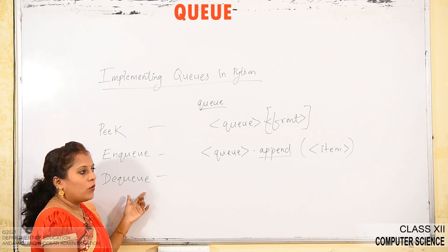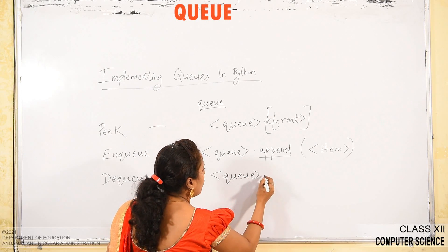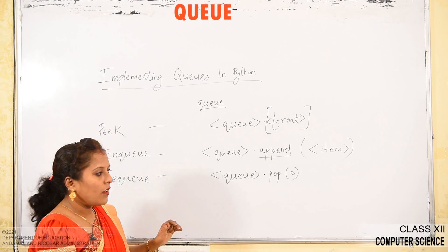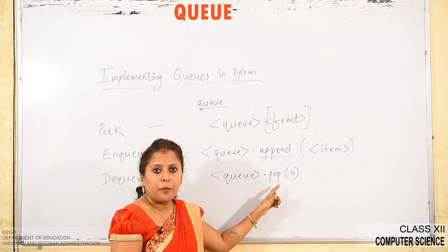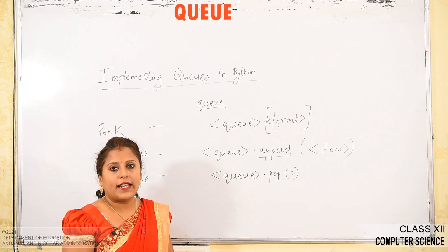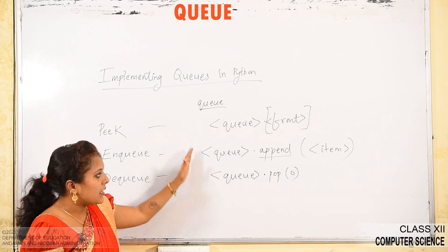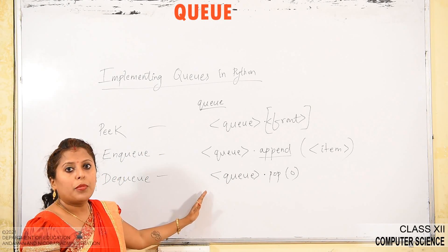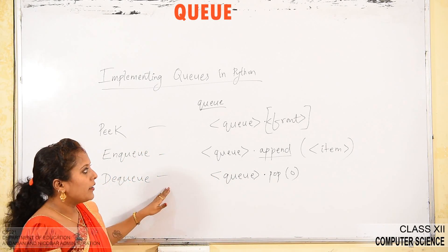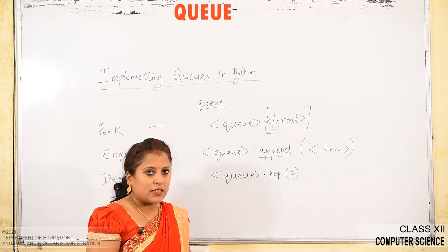For dequeue (DQ), you write Q.pop(0). With the pop method passing index 0, it removes the element present at the front end — the first element is removed. These are the syntaxes for performing basic queue operations: peak, enqueue, and dequeue.